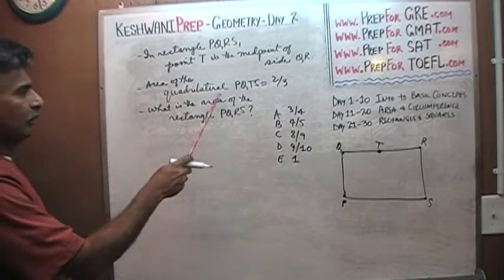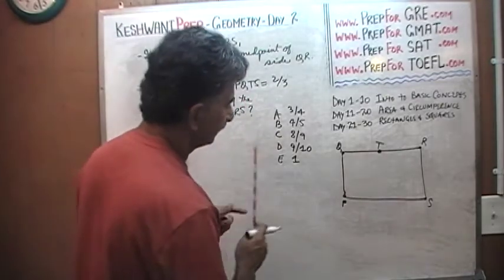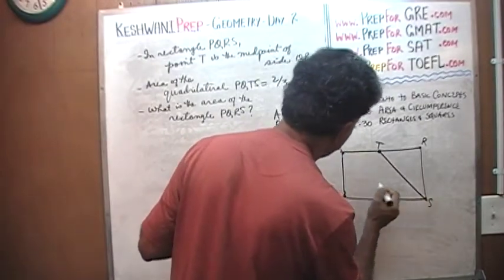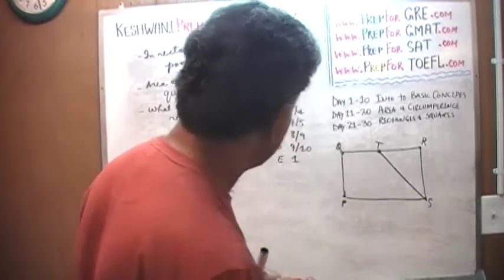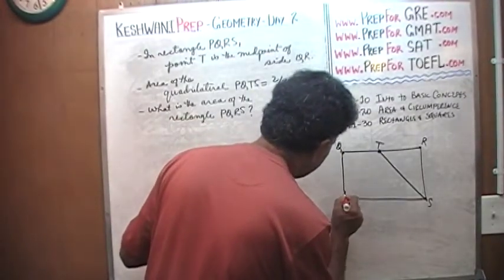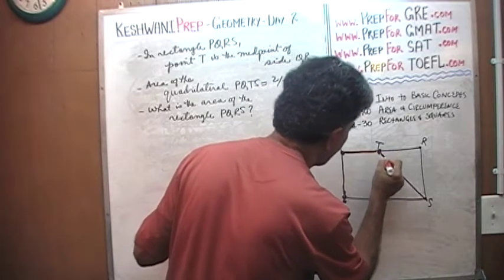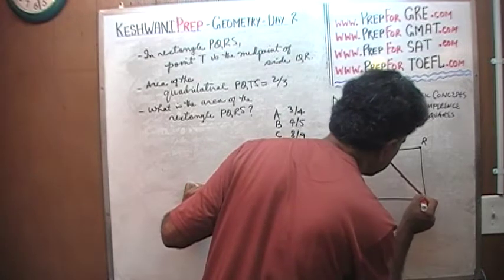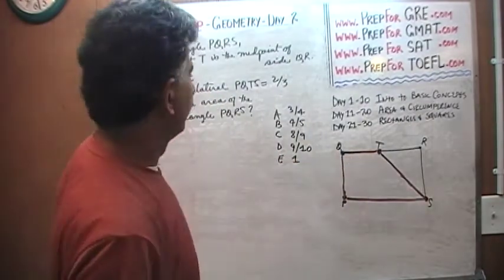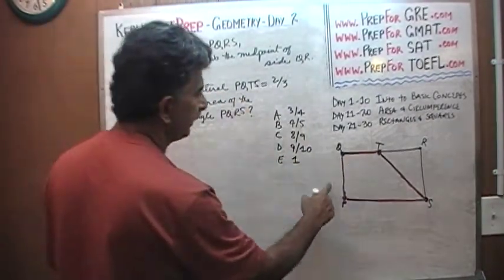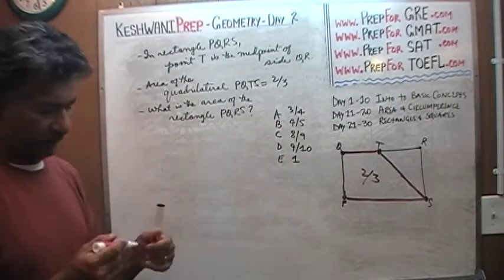The area of the quadrilateral PQTS, this area of the quadrilateral is two-thirds. Here is the quadrilateral that we are talking about, starting from T. PQTS. And we are told that T is the midpoint. We are told that the area of PQTS is two-thirds. The question simply is, what is the area of the whole thing? What is the area of the rectangle PQRS?